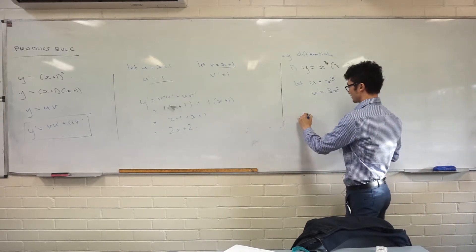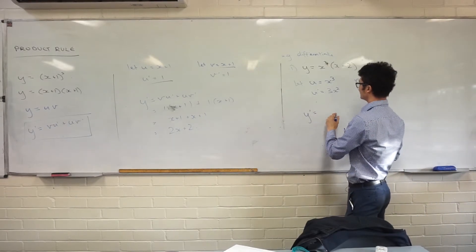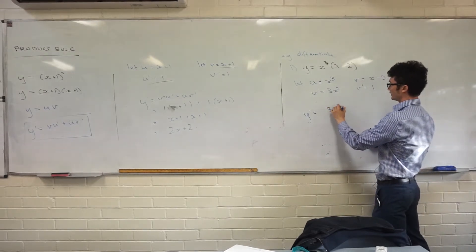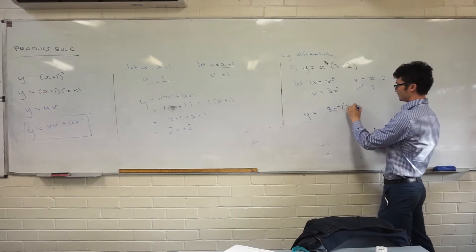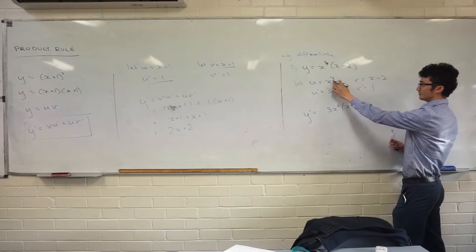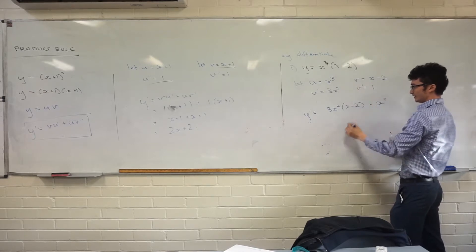Let's put these parts together now. y dash is equal to vu dash, so 3x squared times x minus 2, plus uv dash, which is x cubed times 1, x cubed.